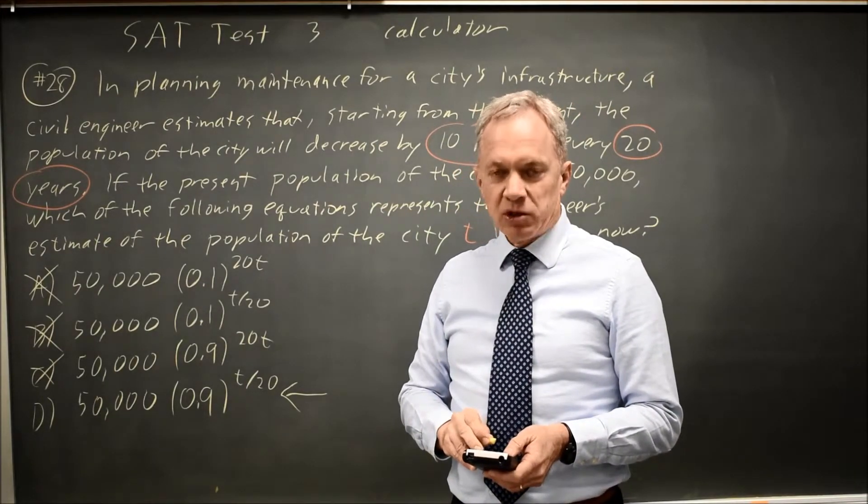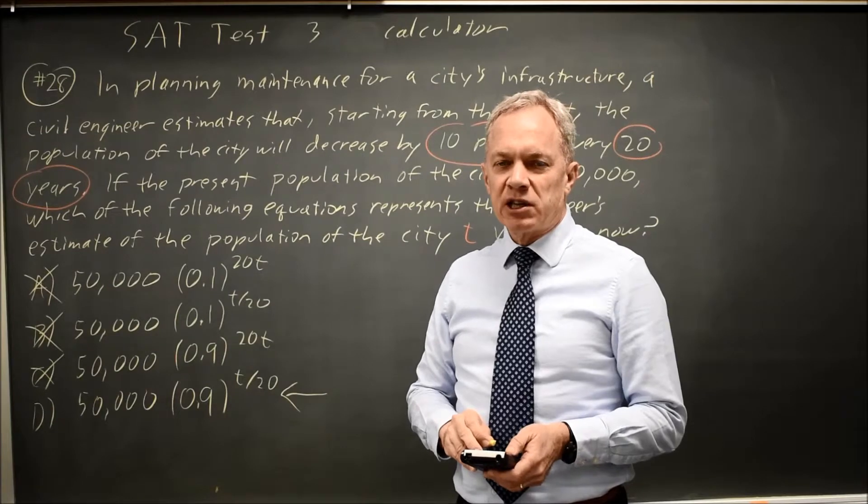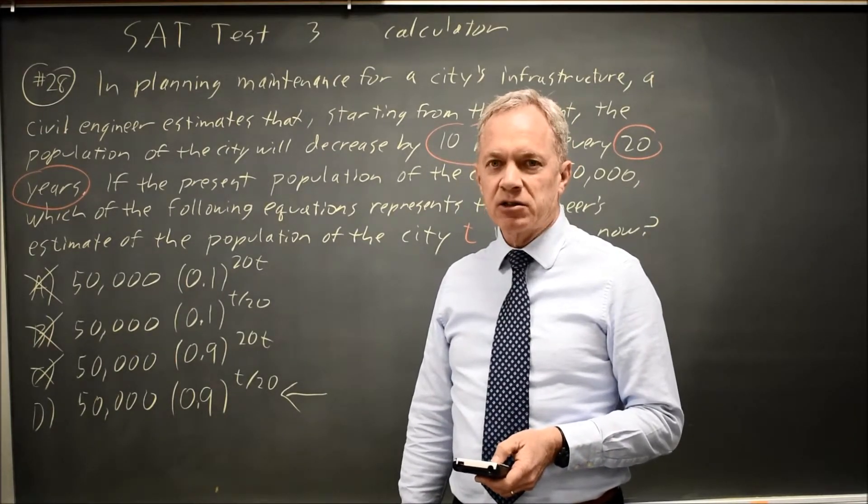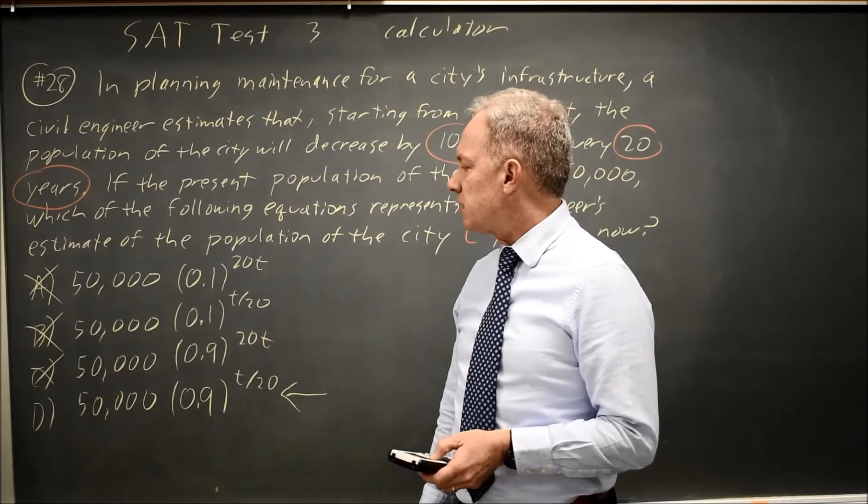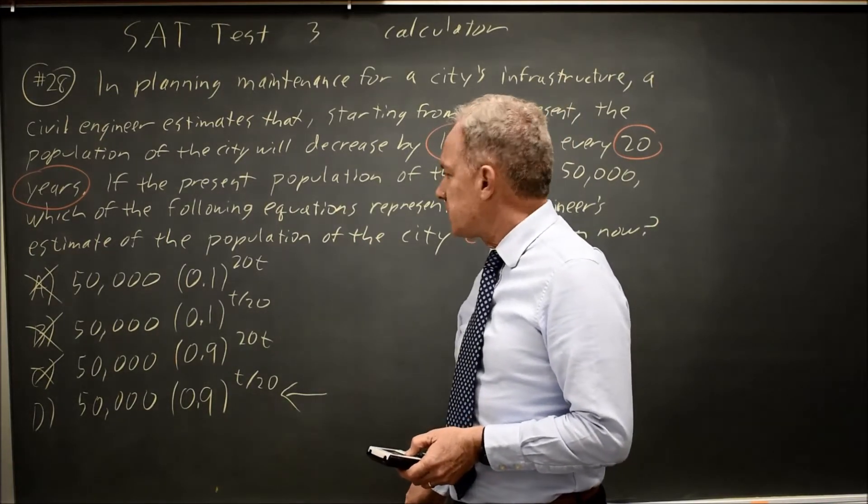And after 20 more years in year 40, I have 40,500, so I lost 10% of what I had in year 20. This is exponential decay, so that would be the correct answer.